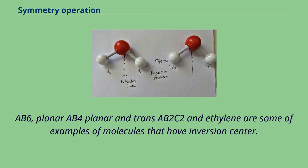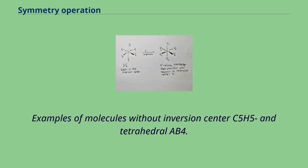AB6, planar AB4 planar and trans AB2C2 and ethylene are some of examples of molecules that have inversion center. Examples of molecules without inversion center C5H5 and tetrahedral AB4.